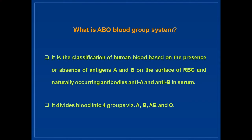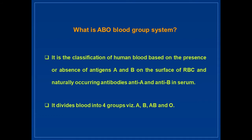First, we shall recall what ABO blood groups are. It is the classification of human blood based on the presence or absence of antigens A and B on the surface of RBCs, and naturally occurring antibodies anti-A and anti-B in serum. It divides blood into four groups: A, B, AB, and O.